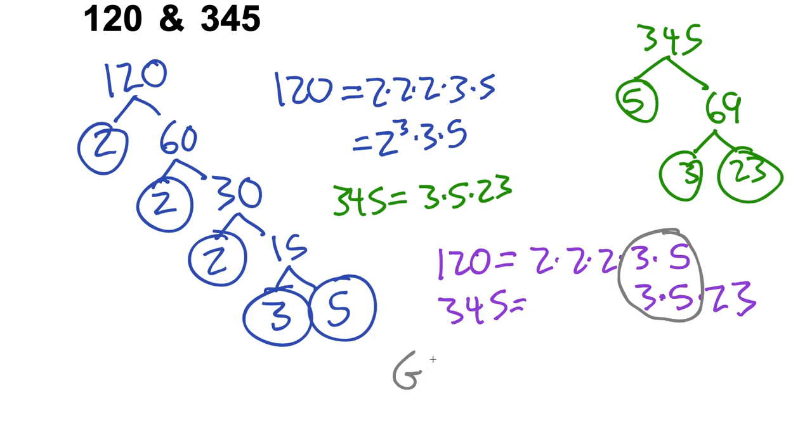So the GCF or GCD of these two numbers, and if you want to write it officially it's GCF of 120, 345, of these two three-digit numbers would be 3 times 5 which is 15. So you probably just want to circle that 15. That's basically the best way to do that.